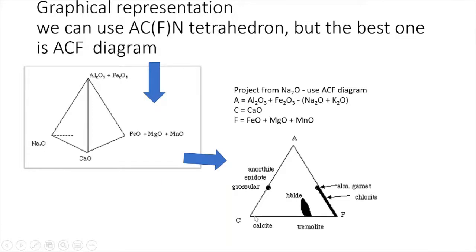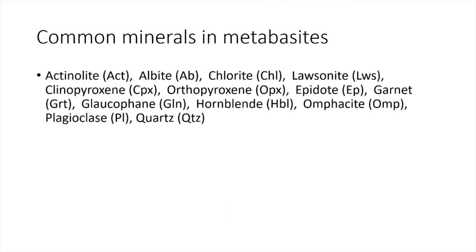When you plot the ACF diagram, along the AC line you get anorthite, epidote, and grossularite; the central area is the field of hornblende; along the CF line you get calcite and tremolite; and along the AF line you get garnet and chlorite. The common minerals expected in metabasite rocks include actinolite, albite, chlorite, lawsonite, clinopyroxene, orthopyroxene, epidote, garnet, glaucophane, hornblende, omphacite, plagioclase, and quartz.